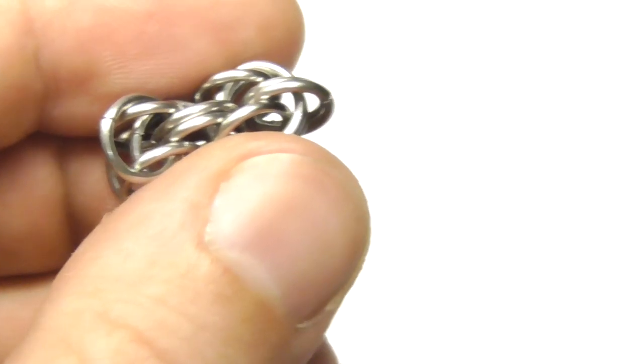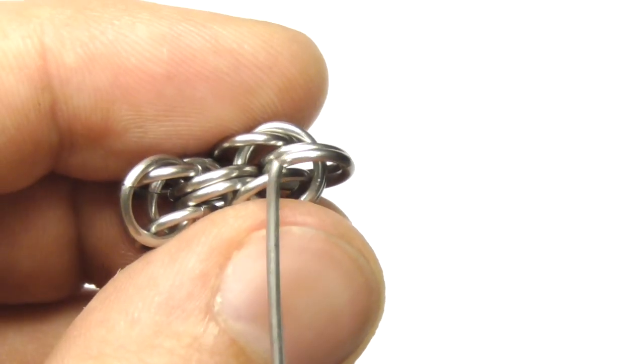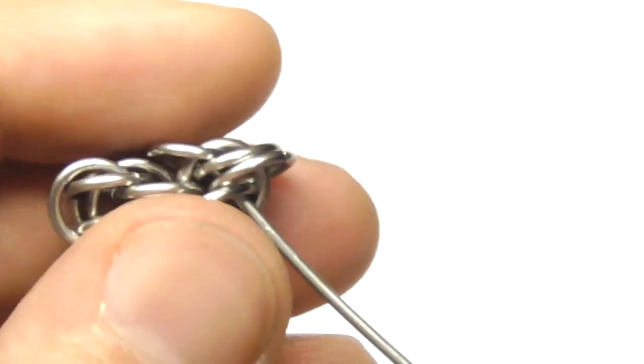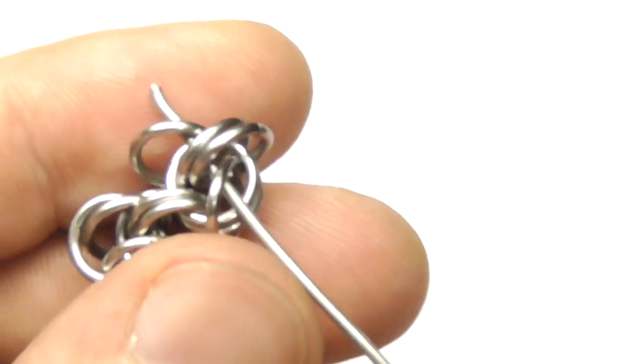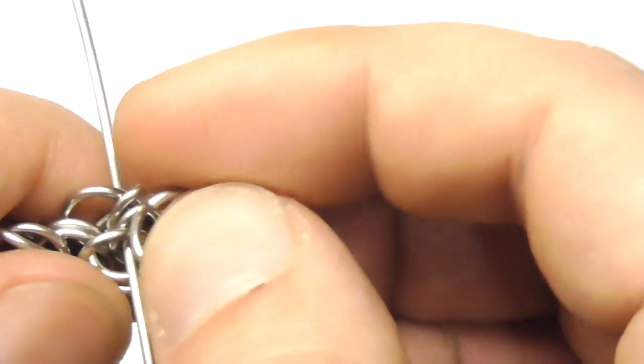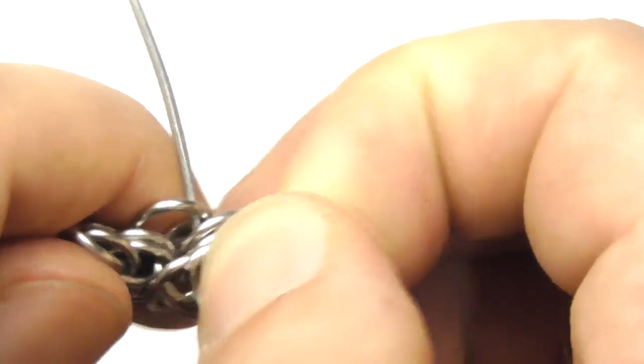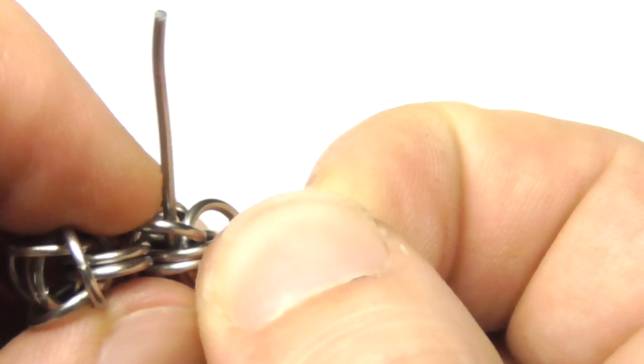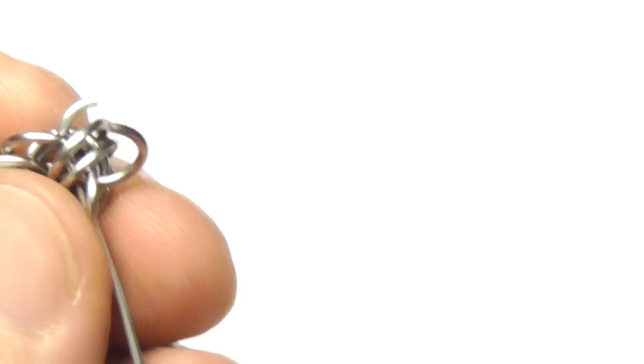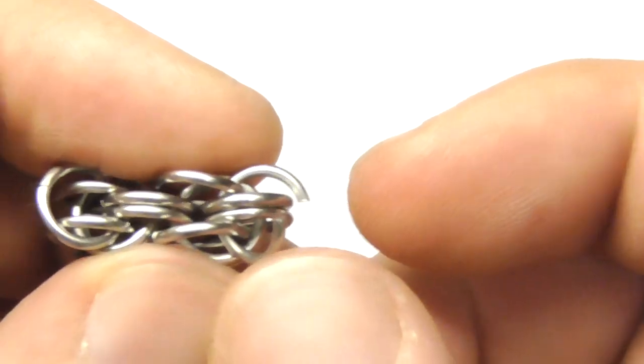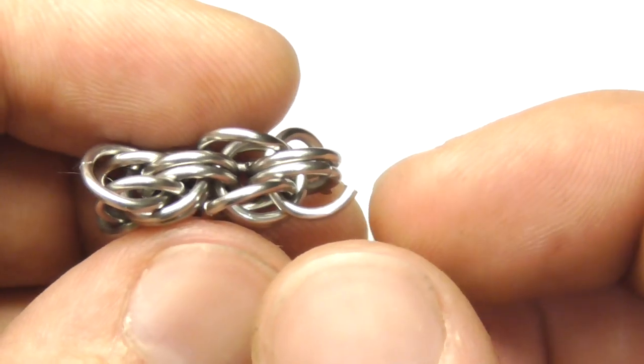So now the next open ring should go through this ring, these two rings, and through this ring. So here, like that. Let's close the ring.